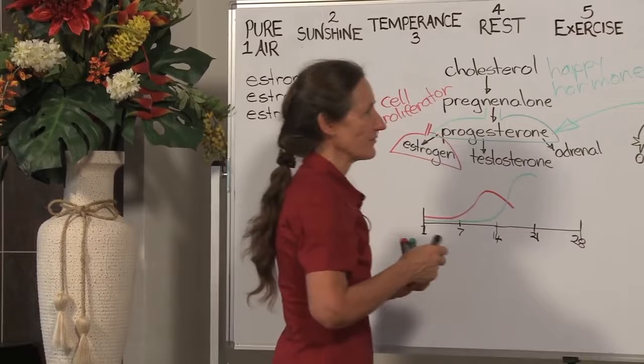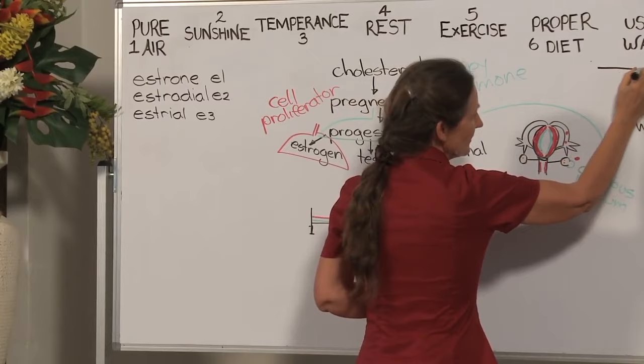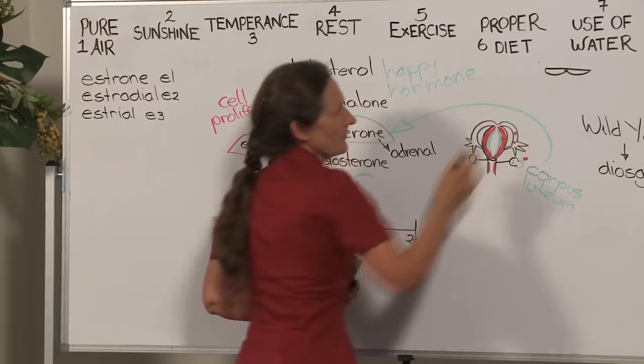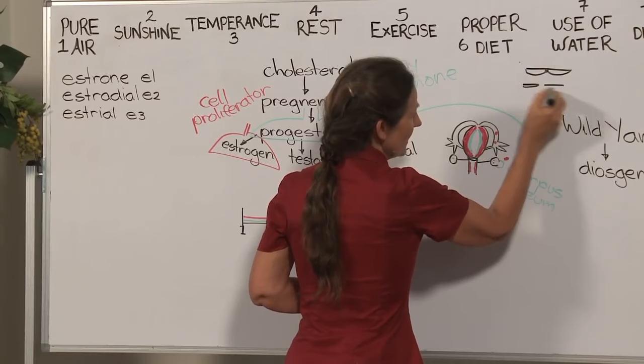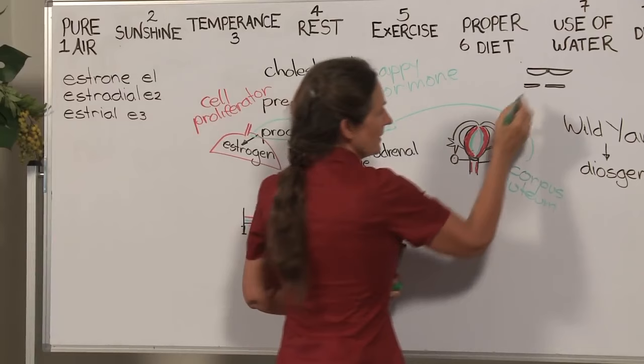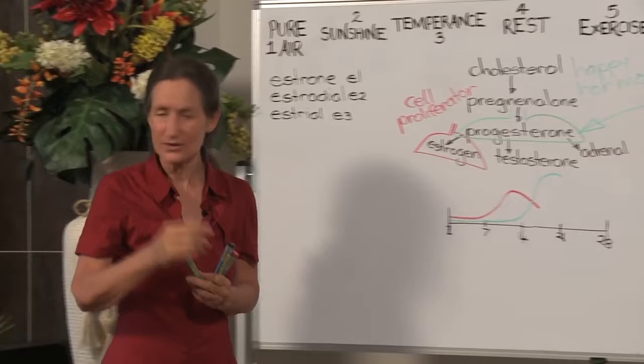But progesterone has another effect, and that is on the cervix. This little plug in here is the seal between the birth canal and the uterus. Usually the cervix looks like two lips with a mucus plug. Under the effect of progesterone, the mucus plug goes, the lips come up a little tighter, and a special form of lubricant is released around the cervix designed specifically to facilitate the entry of sperm up into the uterus.